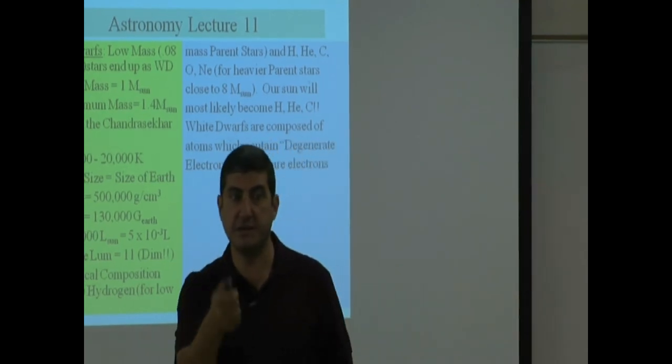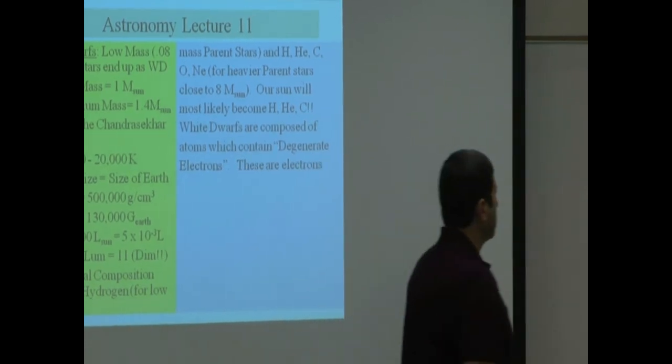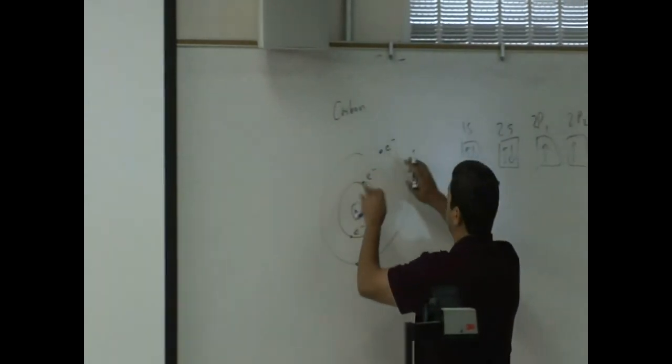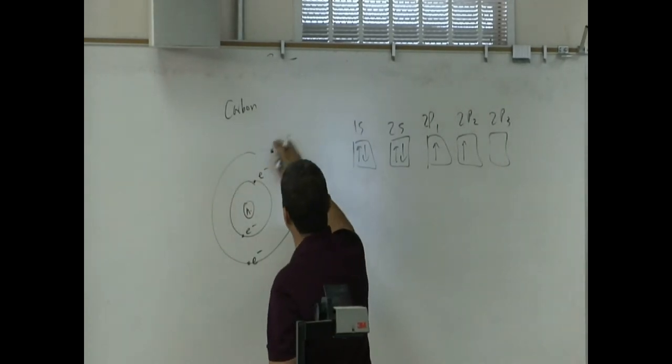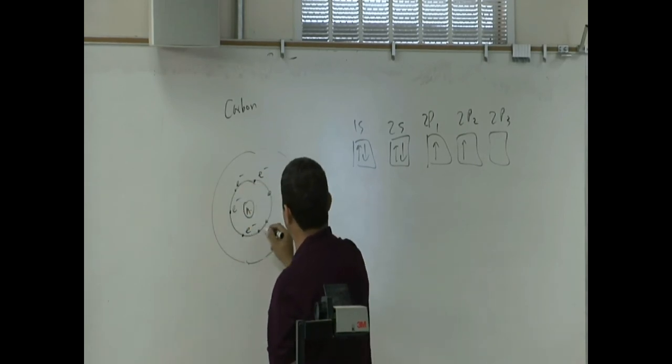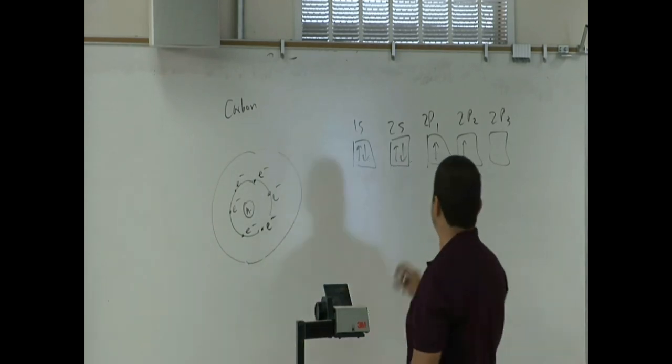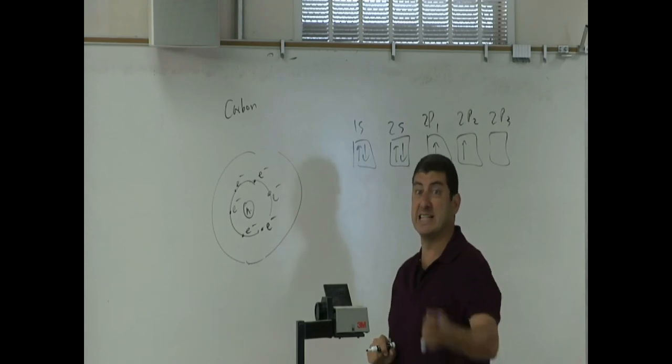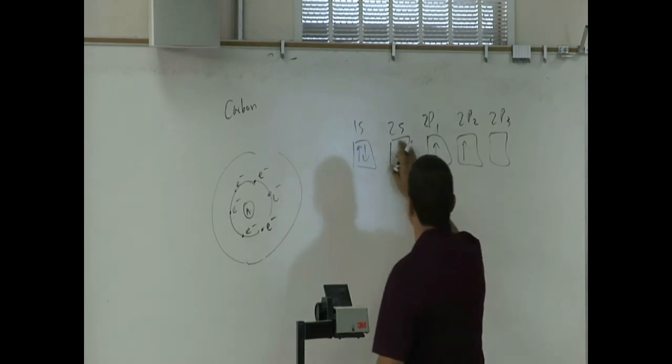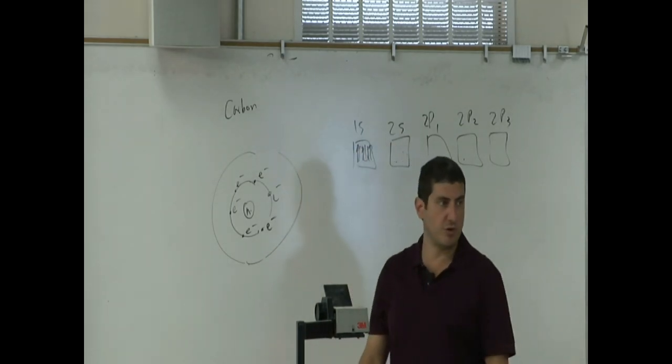Now, here's the difference of the carbon found in the white dwarf star. In the white dwarf star, when we go and look at the carbon, all six electrons are all in the first orbit. One, two, three, four, five, six. That means if I do the electron structure for a carbon in a white dwarf, I fit them all into the one S orbit.